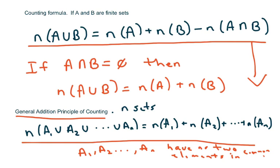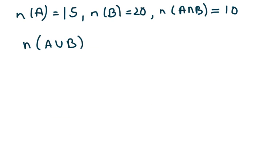I think the best thing to do is just to do some examples. So we have this example: the number in A is 15, the number of B is 20, and the number of A intersect with B is 10. So we want to find the number of A union B.